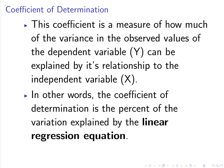The coefficient of determination is a measure of how much the variance in the observed values of the dependent variable Y can be explained by its relationship to the independent variable, which we commonly denote X. In other words, it is the percentage of variation explained by the linear regression equation.